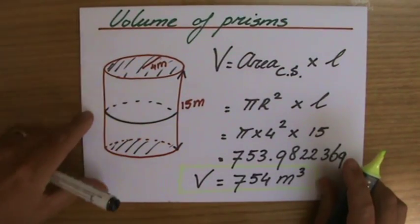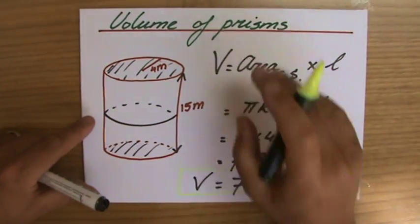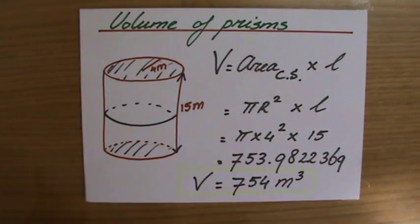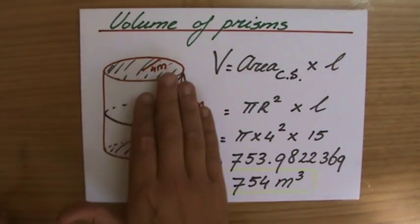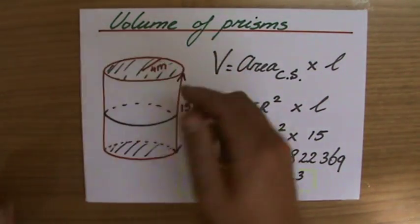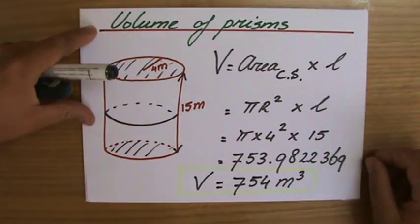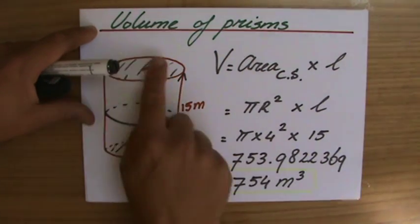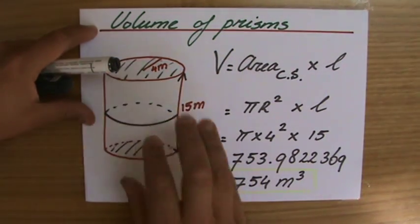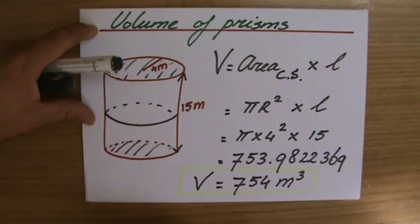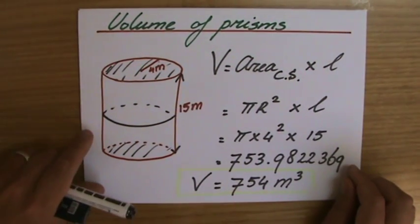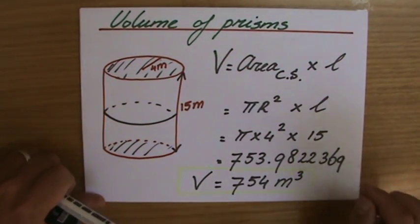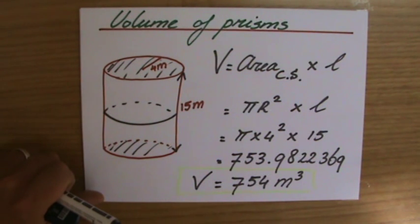It's the volume of this cylinder - technically not a prism, however you also for a cylinder take the area of the cross-section and you multiply that by the height. πr² times the height, or times the length, is the volume of the cylinder. Okay, I hope that was useful. Otherwise you leave me a message and I'll help you. All the best!